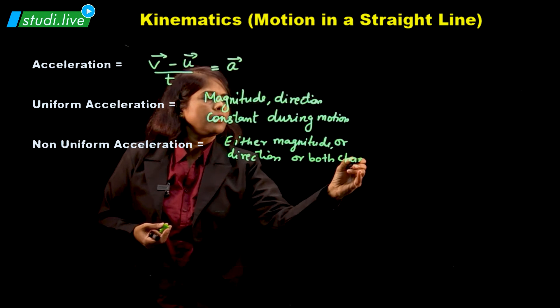Now let us learn some more types. Next is average velocity. We have studied in the previous video about average speed — that was total distance upon total time. So here, average velocity will be displacement upon total time. Displacement meaning the distance between the starting and ending point. So it will be displacement upon total time used to cover that displacement. This is average velocity.